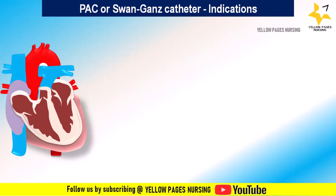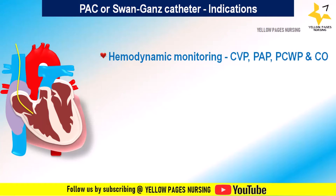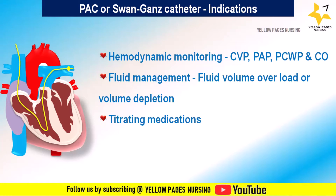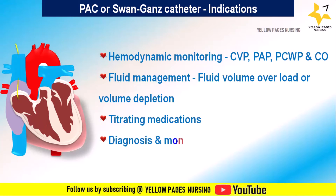What are the indications for the pulmonary artery catheter? First is hemodynamic monitoring, which includes central venous pressure, pulmonary artery pressure, pulmonary capillary wedge pressure, and cardiac output. It helps assess the function of the heart and provides insights into fluid status — that is, fluid volume overload or volume depletion. The next indication is titrating medications. The next is diagnosis and monitoring of conditions such as heart failure, pulmonary hypertension, cardiac surgeries, and other cardiovascular disorders.